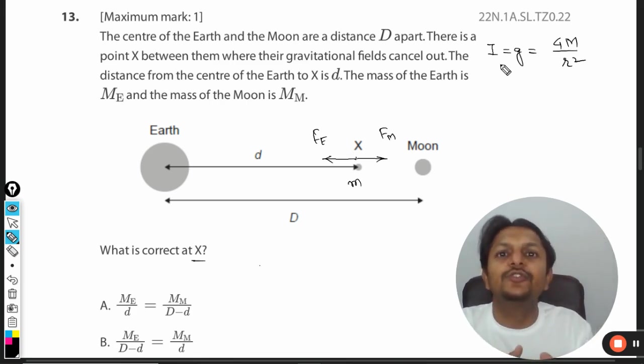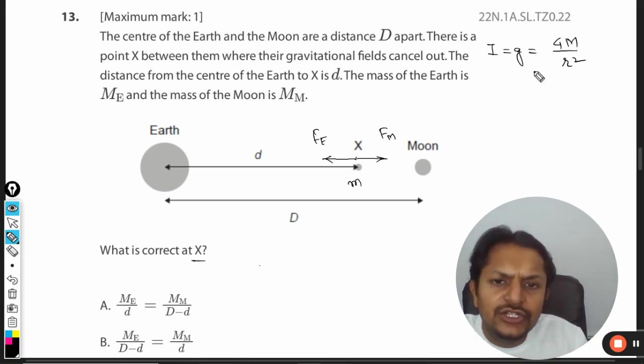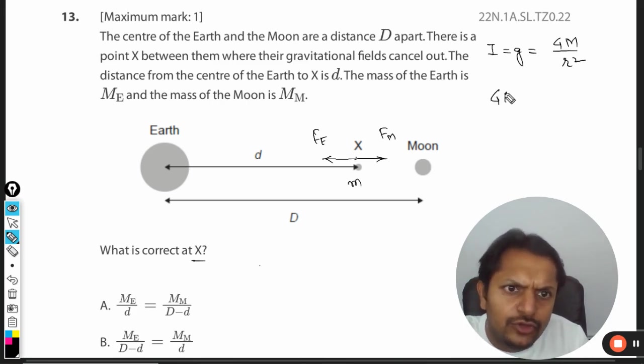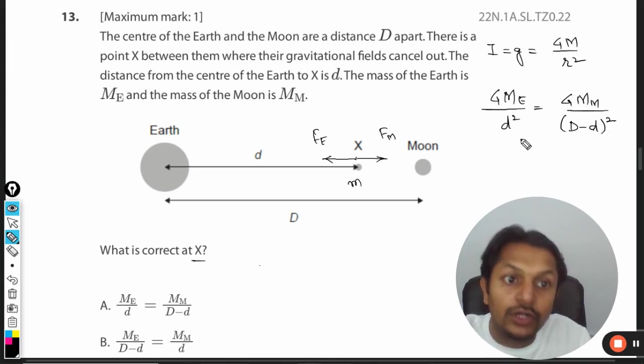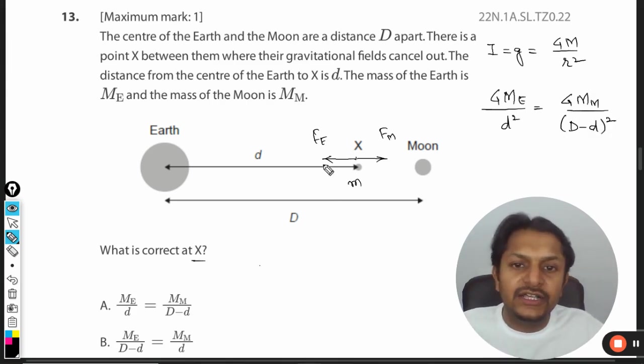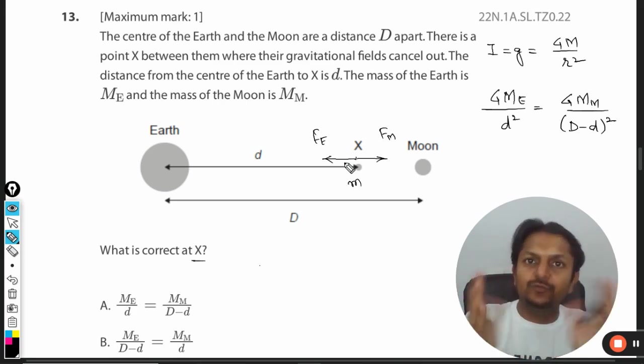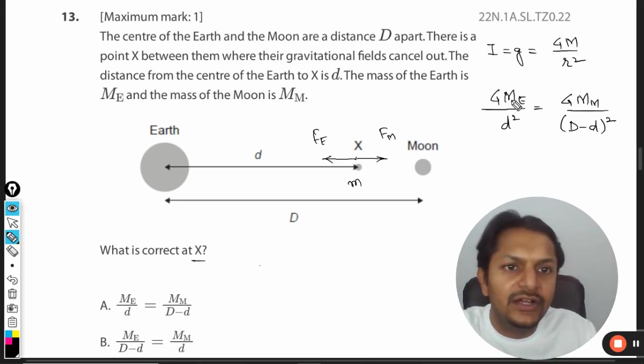This is coming out to be G mass of Earth divided by d squared and G mass of Moon divided by capital D minus small d whole square. Because the gravitational field strength at this point is equal and opposite to each other, G gets canceled out.